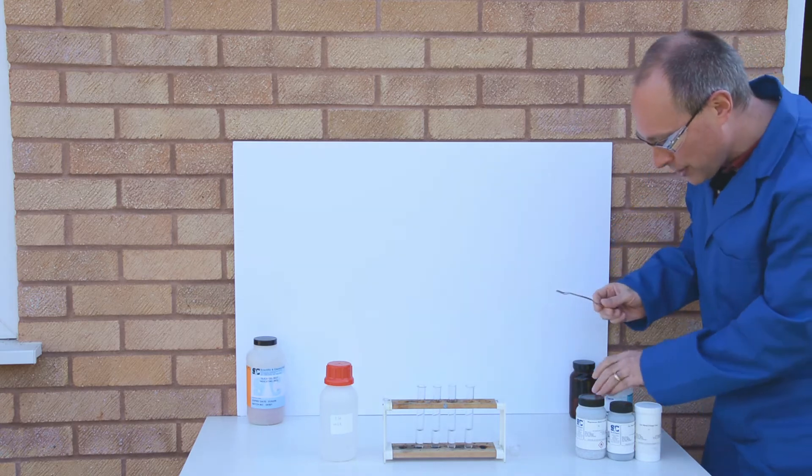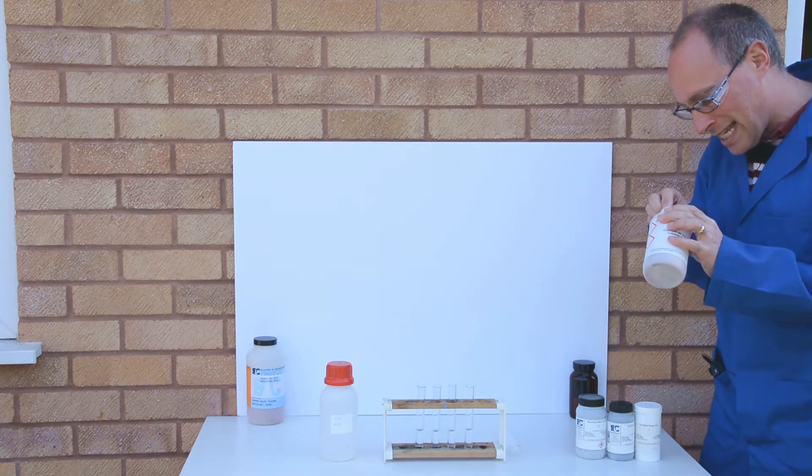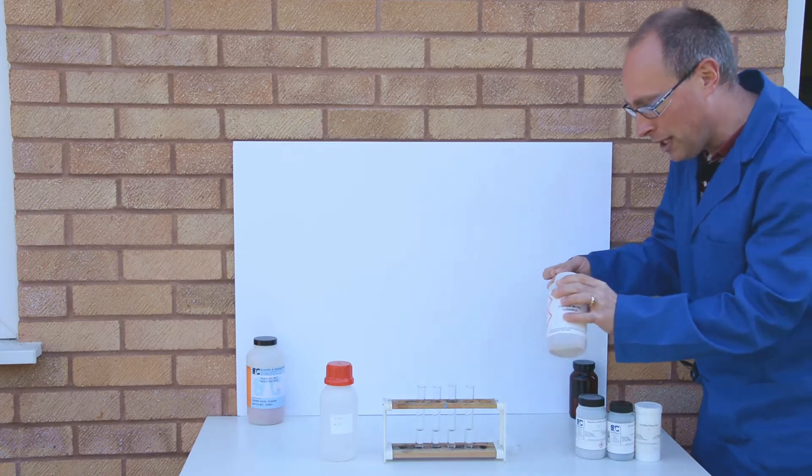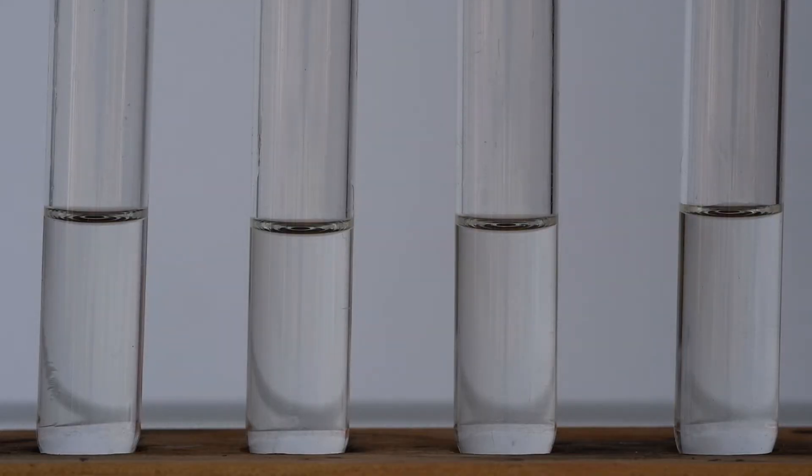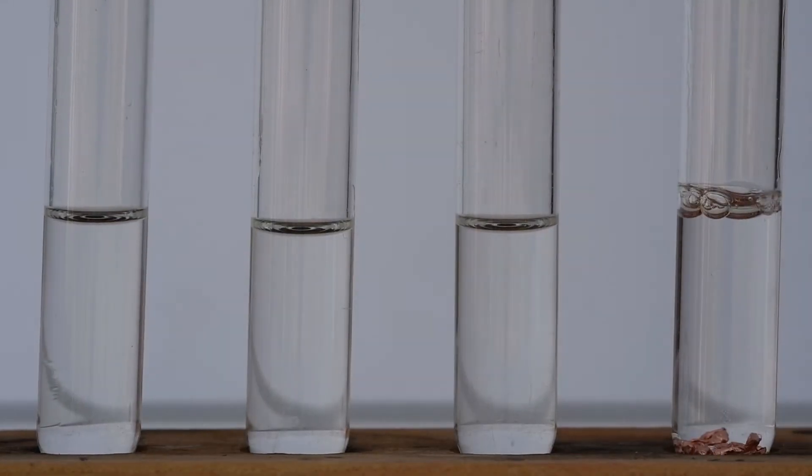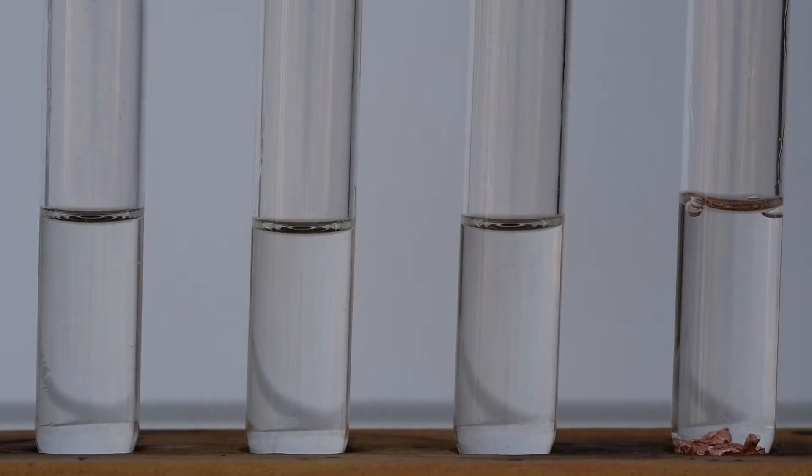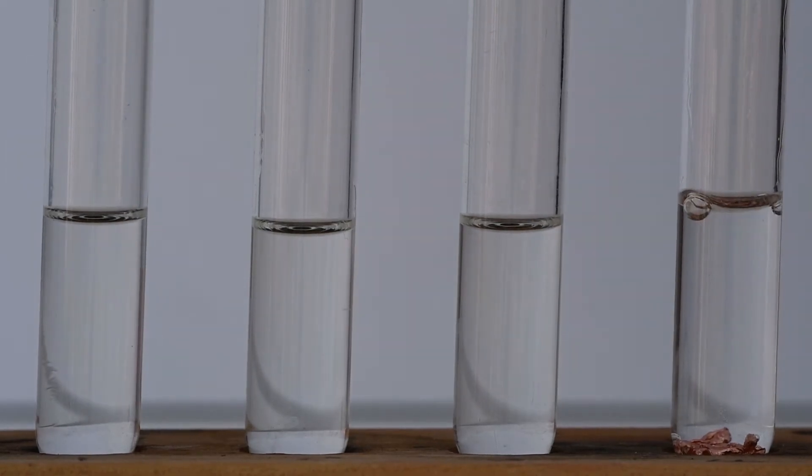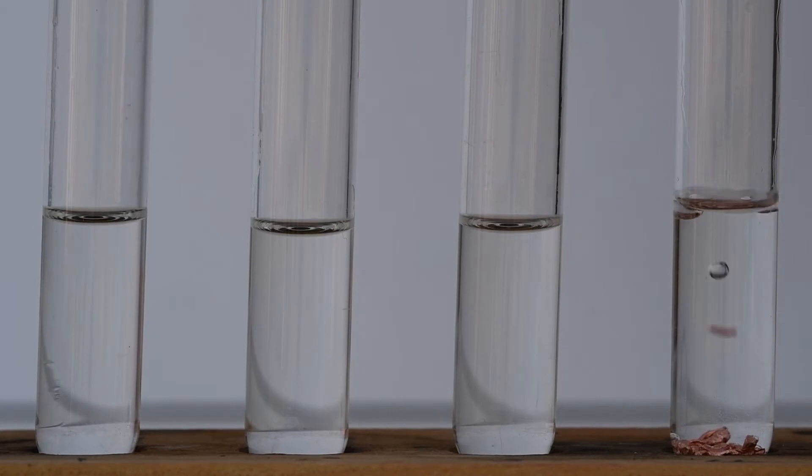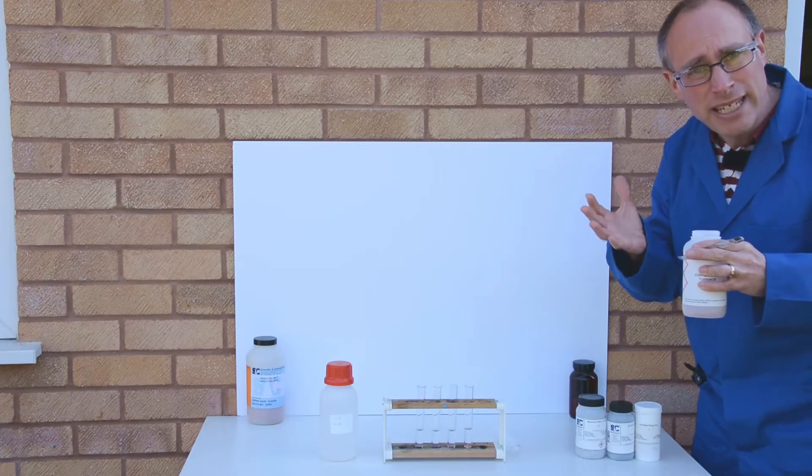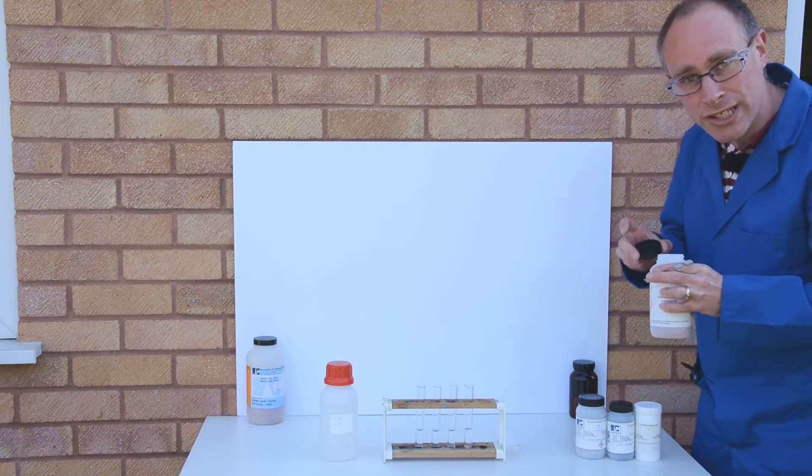So in the first test tube I'm going to add just a little bit of copper. So there's the copper and no evidence of any chemical reaction there. Any little bubbles in there are just due to little bits of air being trapped around those copper turnings.